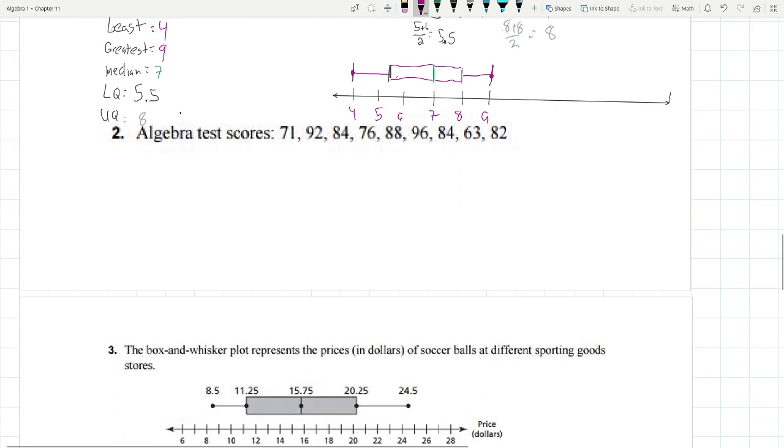Let's go do the algebra test scores. Again, the first thing that I see is these are all mixed together. Let's redo this. 63, 71, 76, 82, 84. There's two of those, 84 and 84. 88, 92, and 96. That's everybody.